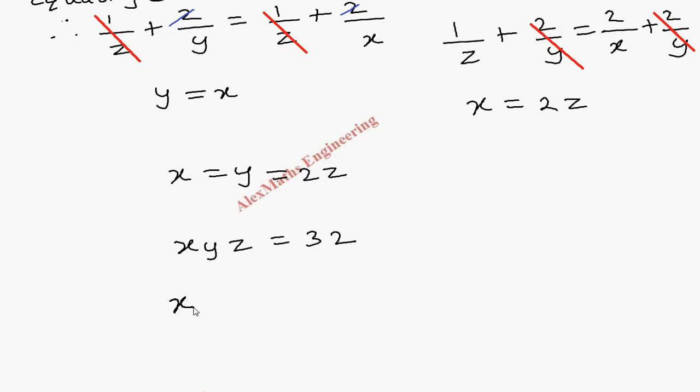So let's keep x as it is. Instead of y, I can put x again. But instead of z, x/2 = 32, because from this the value of z = x/2. So everything in terms of x so that I can find the value of x.